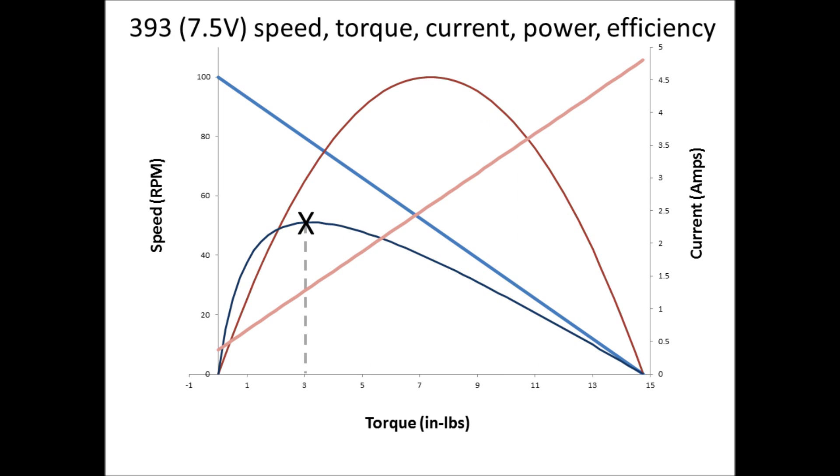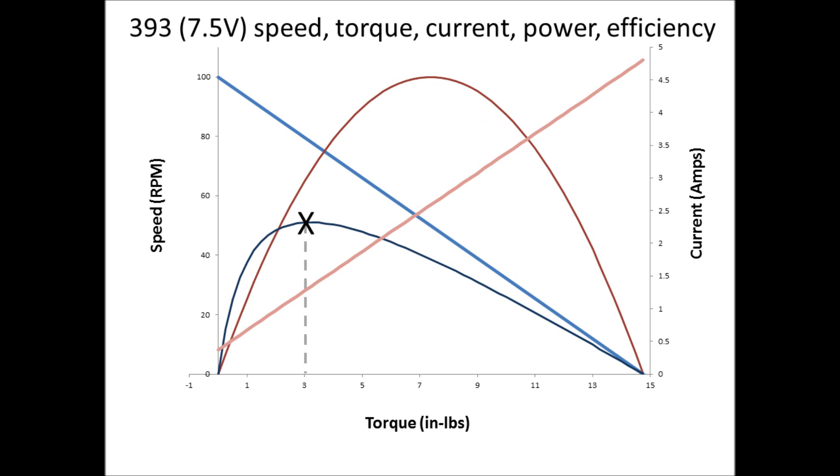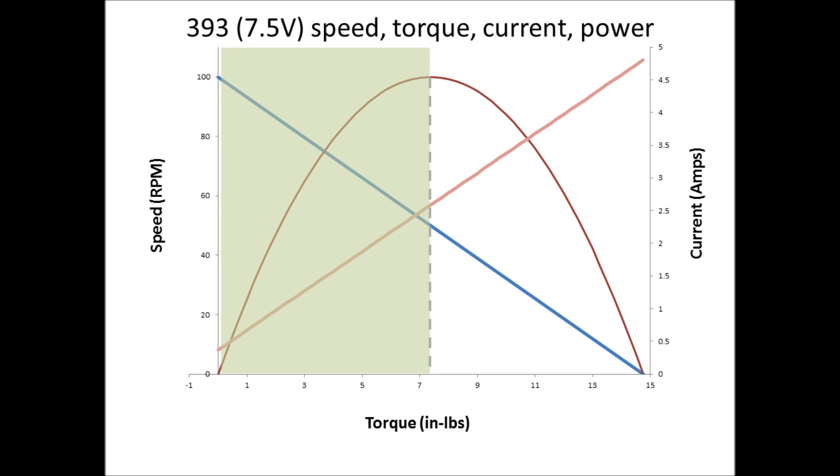The point where VEX motors are most efficient at converting electrical power into mechanical power is at around 3 inch pounds of torque at 80 RPM. When you design robots, it's a good idea to try and keep torque loads on your motors in the lower half of their range where they use less current.